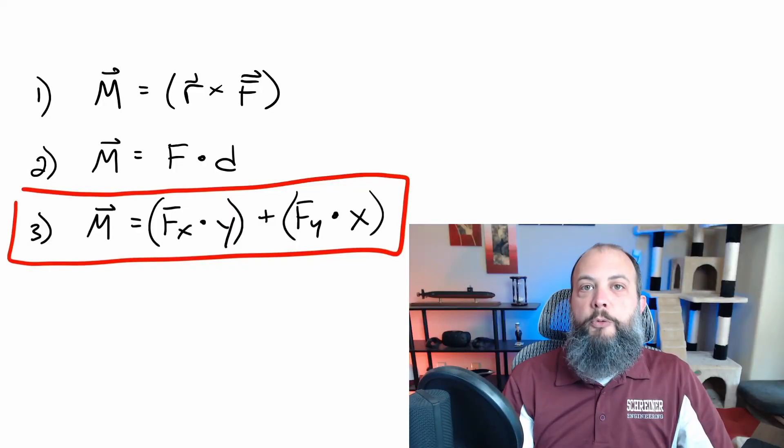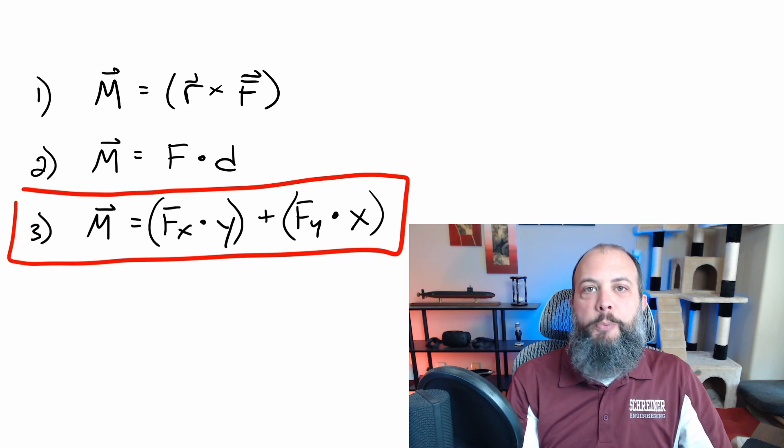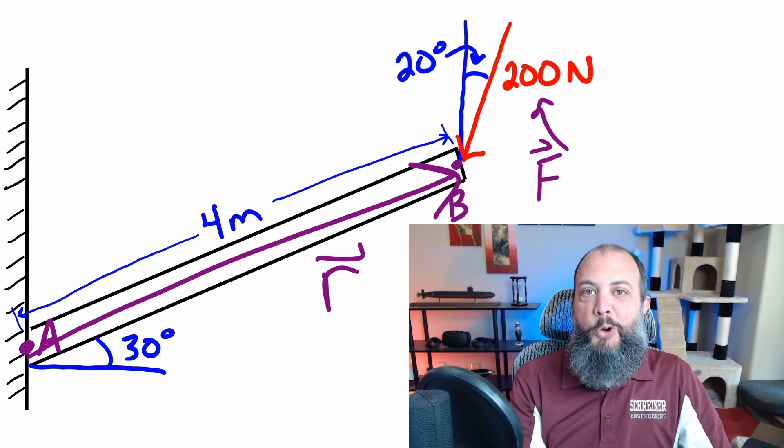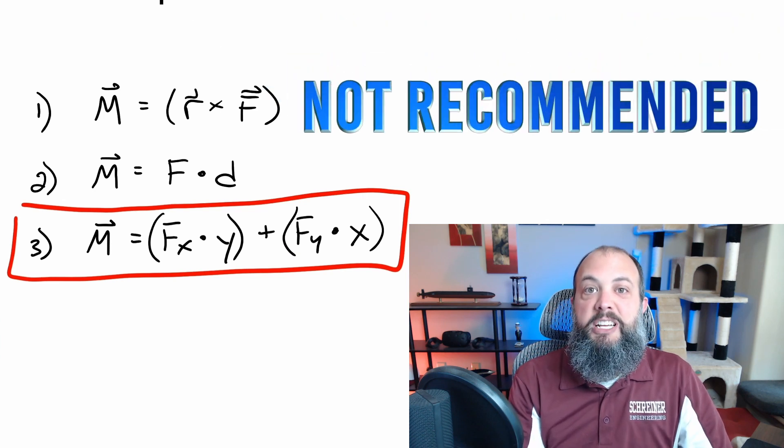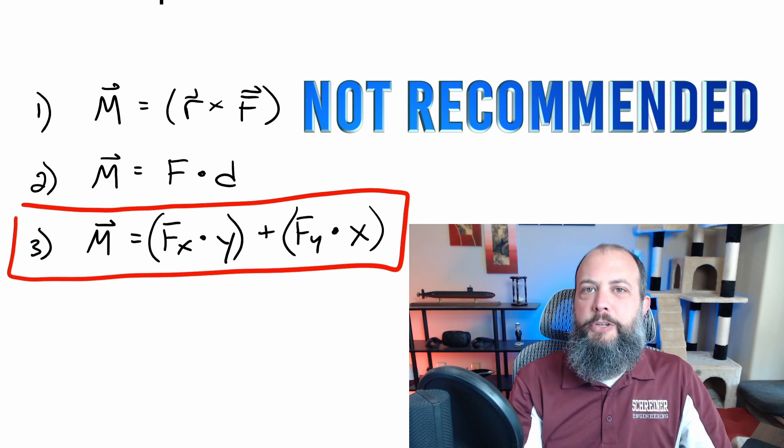So there's three main ways to find a moment about a point. The first is the vector formulation where you do a cross product, R cross F. For this problem, R is your position vector from A to B, and then F is the force vector. And in order to do the cross product, you're going to need them both in Cartesian form. That's I, J, K components. That's not the method I recommend. The math actually works out to be about the same as the scalar method, but conceptually it's a little bit more confusing than the scalar method. So I recommend skipping number one.